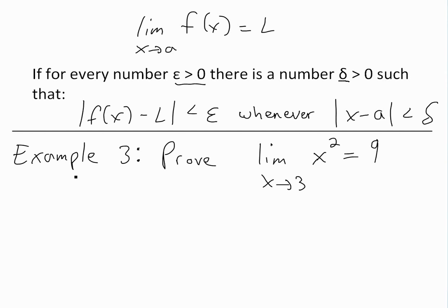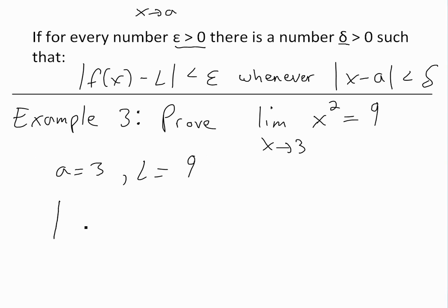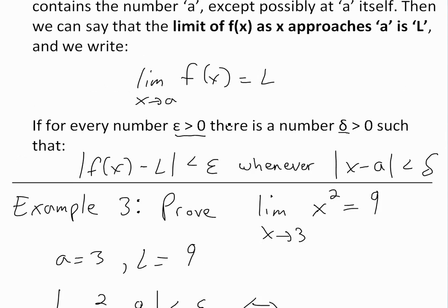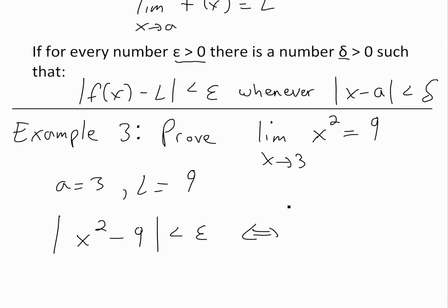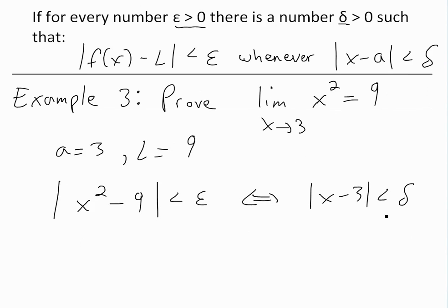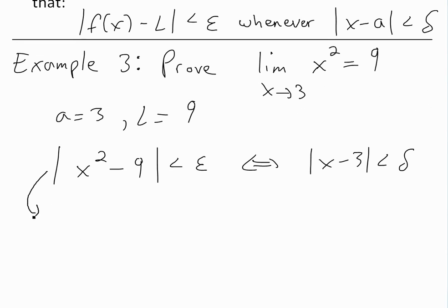To get this, we'll write the definition of a limit where a equals 3 and L equals 9, and f(x) is x squared. So we'll write |x² - 9| less than epsilon, whenever |x - 3| is less than delta. We need to find this delta. Now |x² - 9| is actually a difference of squares.